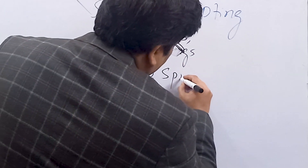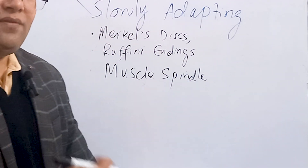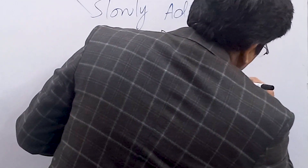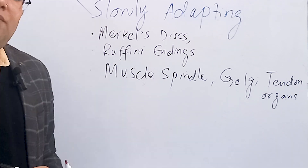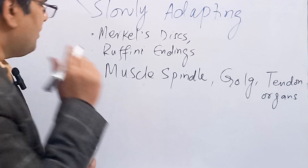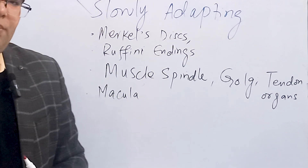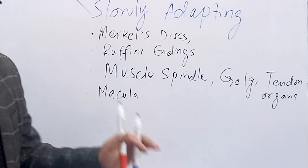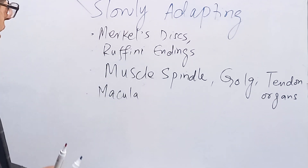Muscle spindles are also slowly adapting receptors. They continuously inform our brain about the length of a muscle and regulate our muscle tone. Golgi tendon organs are also slowly adapting receptors — both are proprioceptors. Joint capsule receptors are another example. Macula receptors in the utricular and saccular of the vestibular apparatus are slowly adapting; they are always working to inform the brain about balance and equilibrium whether we are sitting or walking.